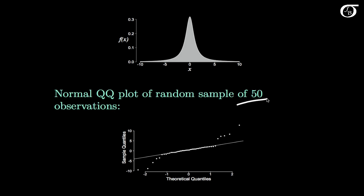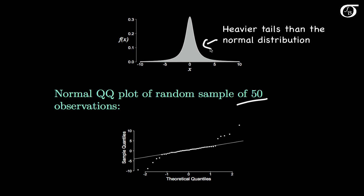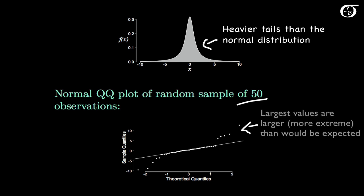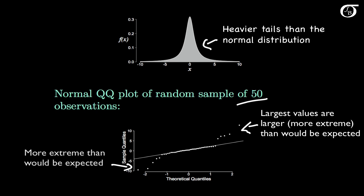Here I'm drawing 50 observations from a heavy-tailed distribution — one with greater area in the tails than the standard normal, so we expect more extreme values. We see that in the QQ plot: the largest values in the right tail are even larger than would be expected under normality, and the smallest values in the left tail are even more extreme than would be expected under normality as well.